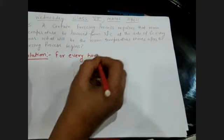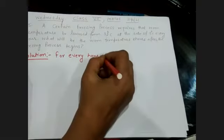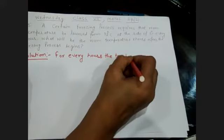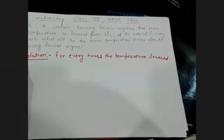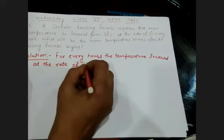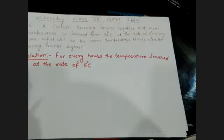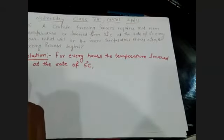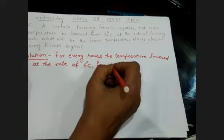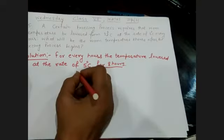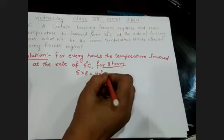For every hour the temperature is lowered at the rate of 5 degrees Celsius. For 8 hours that is 5 into 8, which means it is lowered 40 degrees Celsius.